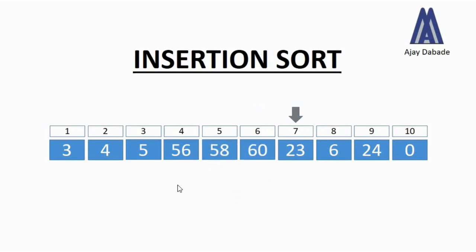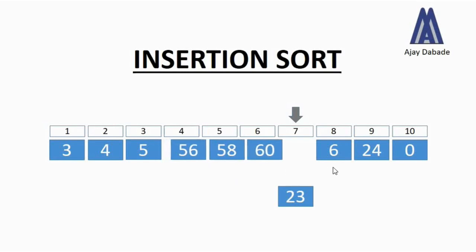The pointer moves to the next position, where we have the number 23. We take this number and compare it with the left-hand side numbers. 23 is less than 60, 58, and 56, so we shift those three numbers one position towards the right, and then we place the number 23 at its right position.